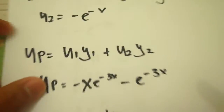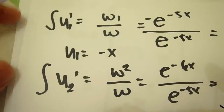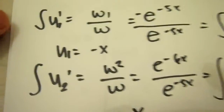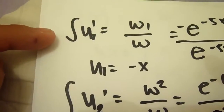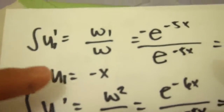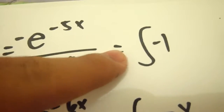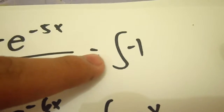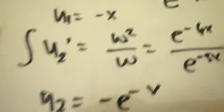After getting Omega 1 and Omega 2, we substitute them to find u1. We integrate u1 prime, which equals Omega 1 over the Wronskian. This gives us the integral of negative 1, and after integrating, u1 equals negative x.